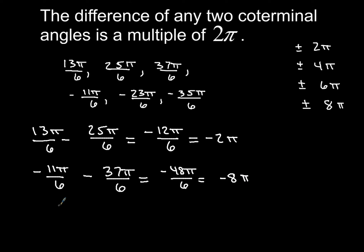Or we could do, say, 25π over 6, and we could subtract negative 11π over 6. When we subtract that, and be careful here, watch your signs, you end up with 36π over 6, which is just 6π. So all of these are multiples of 2π, which tells you that all of these angles, 13π over 6, 25π over 6, 37π over 6, negative 11π over 6, negative 23π over 6, negative 35 over 6, oh, and we forgot the one we started out with, just π over 6. All of those angles are all coterminal angles. Pretty cool stuff. As long as you can add and subtract.